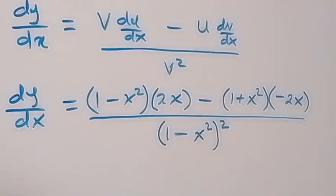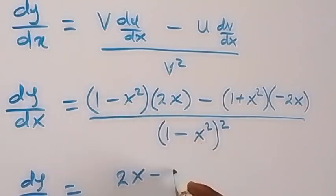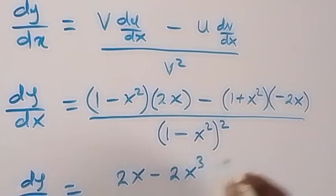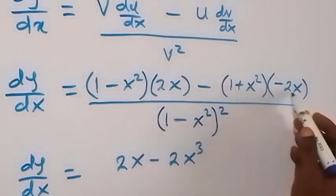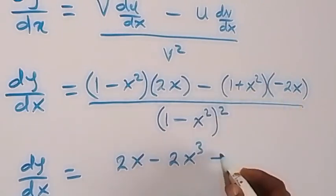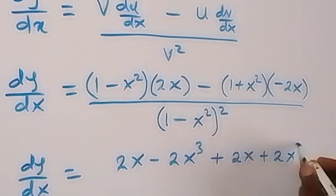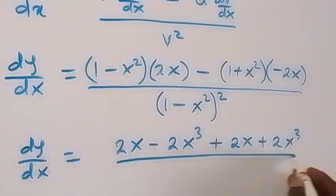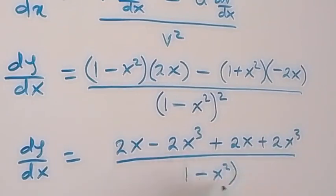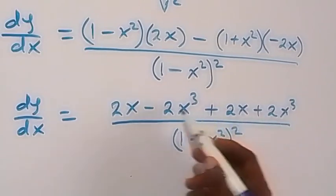When we solve, we open the brackets. We get 2x minus 2x cubed, then minus times minus gives plus, so we have plus 2x plus 2x cubed, all over (1 minus x squared) all squared. The minus 2x cubed and plus 2x cubed cancel out.